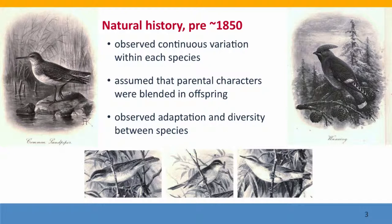Before about 1850, biologists looked at organisms in their natural environment and they observed continuous variation within each species. There was substantial variation, and the biologists basically assumed that parental characters were blended in the offspring — that the offspring would always be intermediate between the two parents. But they didn't really test this. They also observed that different species were very well adapted to their different environments and different lives, and they struggled to find explanations for this.